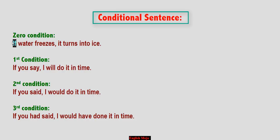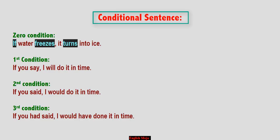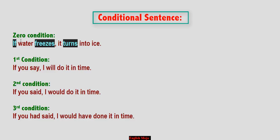Let's start with an example of zero conditional. If water freezes, it turns into ice. This is a scientific or general truth — it is always true. For zero conditional, both clauses use present tense: present indefinite tense in the 'if' clause, and present indefinite tense in the result clause. This is called the zero conditional.